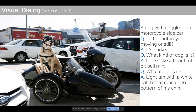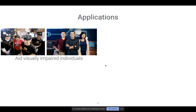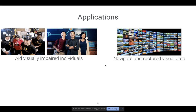These are the kinds of tasks we're interested in at the intersection of vision and language. Why is this intersection interesting or important to study? One reason is applications. For visually impaired users who don't have access to the visual signal, systems that can translate the visual signal to language allow these users to access visual information through language. And for applications involving large quantities of unstructured visual data that you're trying to navigate, organize, or search through, language is a very natural modality to use.